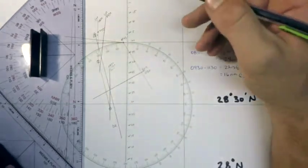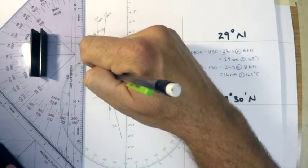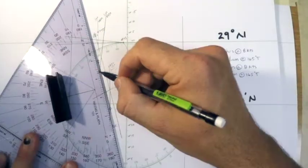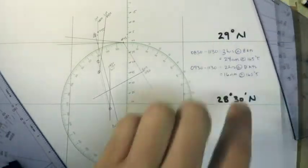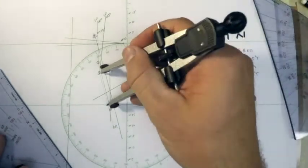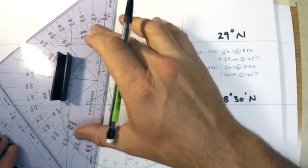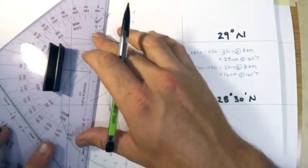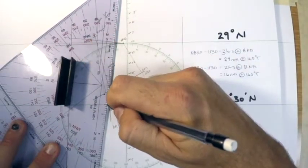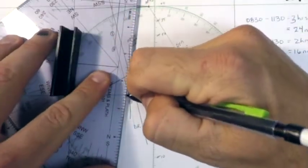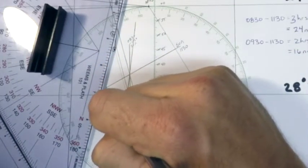The last step would be to advance the 930 line, so once again I'll pick a point on the 930 line. I'll advance that one and it was going to be 16 nautical miles because it was two hours. Then finally I'll parallel the 930 line from where it started to my new point. That's where it's advanced to, and it looks like the three lines cut fairly well. I'll label this one 0930 to 1130 sun.